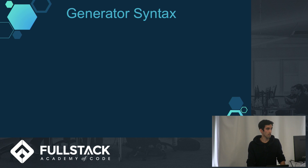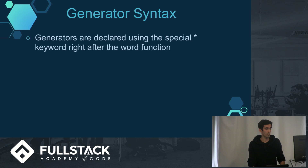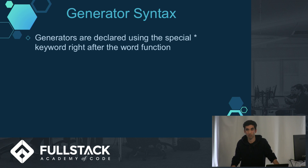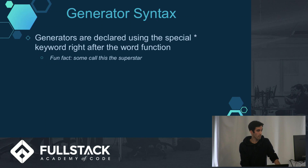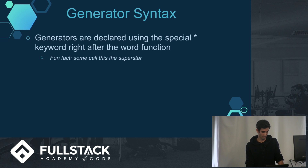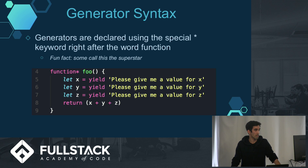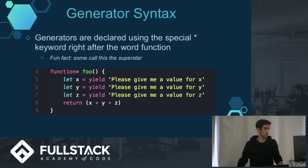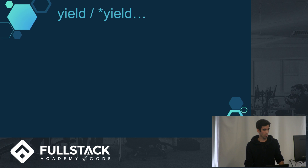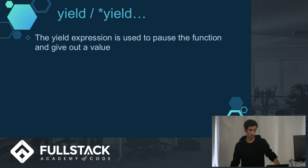Here's a little bit of the syntax. Generators are declared using this special asterisk keyword, which comes right after the word function. If you look at this sample code, the function foo is declared with the asterisk keyword, and there are three separate variables, and the function returns the sum of those variables. There's also a special keyword called yield, which is specific to generator functions. Yield is kind of where the magic happens inside the function, and it's used to pause the function and also give out a value.